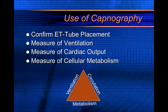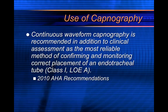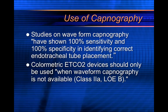There are a lot of different reasons you can have an alteration in your normal end tidal CO2. Continuous waveform capnography is recommended in addition to clinical assessment as the most reliable method of confirming and monitoring correct placement of an ET tube — the 2010 AHA guidelines recommend this as a class one recommendation. Studies on waveform capnography have shown 100% sensitivity and 100% specificity in identifying correct ET tube placement. Colorimetric devices — those little yellow-to-purple or purple-to-yellow devices — should only be used when you can't use waveform capnography, because colorimetric capnography is not nearly as good as waveform capnography. It's worlds apart.